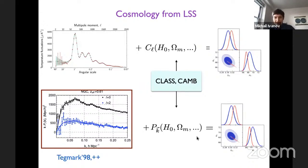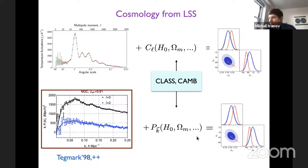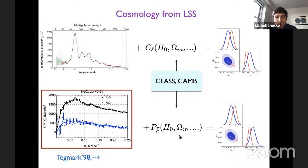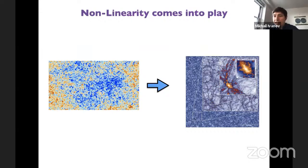This program was initiated long ago — there's a famous paper by Max Tegmark, and even earlier people were thinking about this. But unfortunately this program was not completely carried out because 20 years ago the time was not ripe: there were no sufficiently powerful tools to compute the non-linear power spectrum as a function of cosmological parameters. Now we're trying to revive this idea with new, better tools from recent advances in large-scale structure theory.